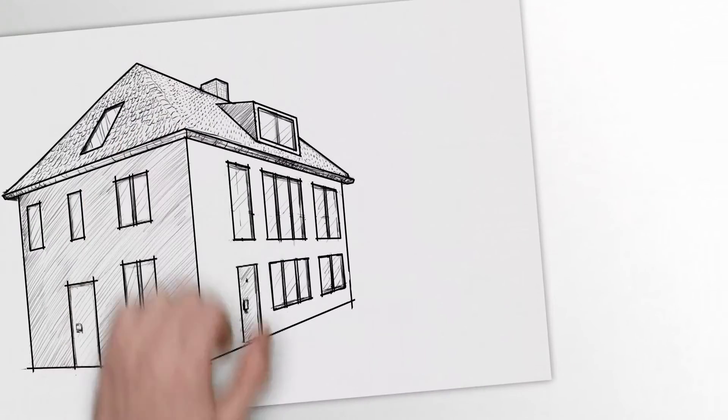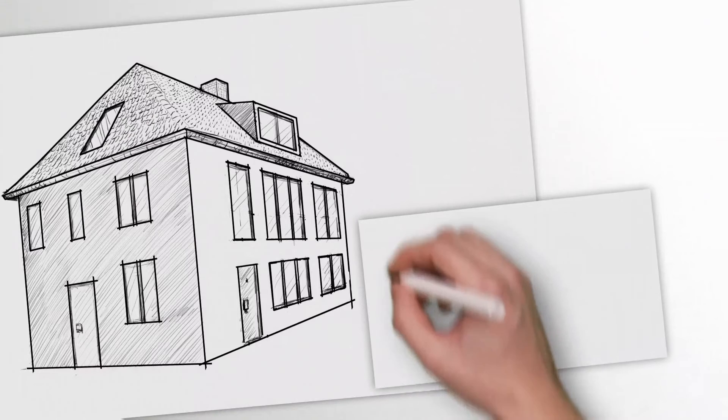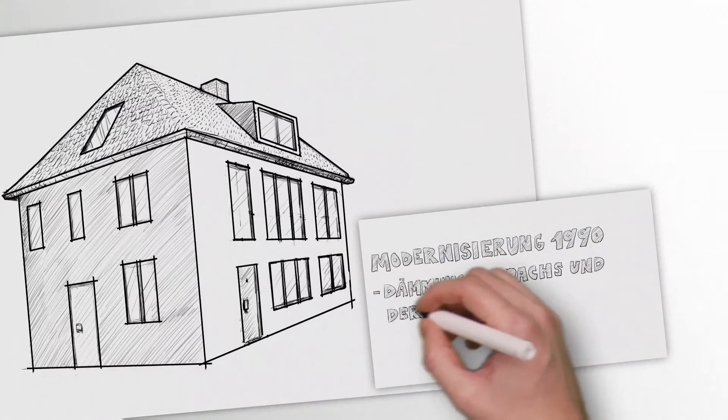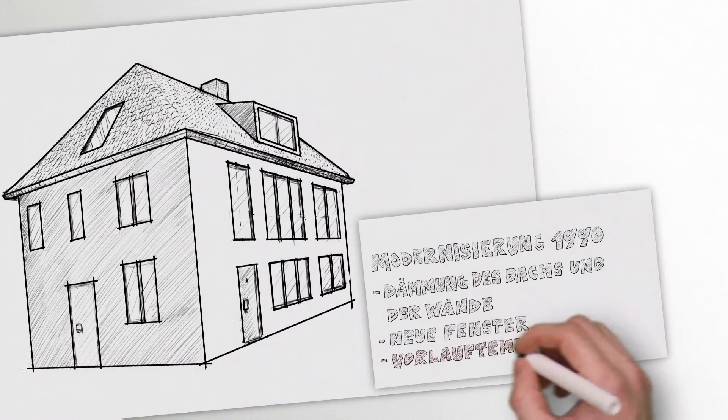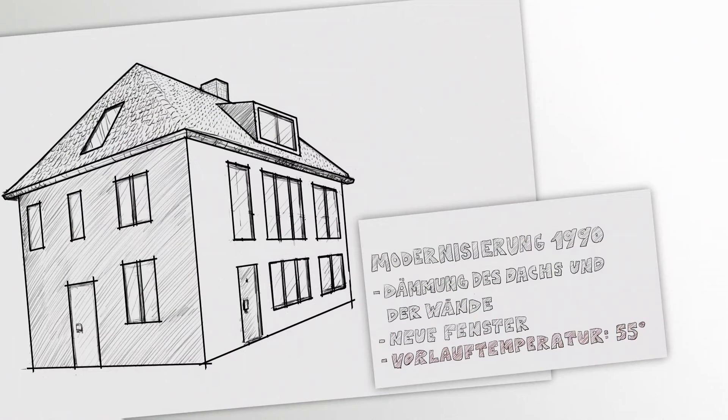The modernization of the property in 1990 has already improved things. The required flow temperature is now 55 degrees. At this temperature a modern heat pump can work very efficiently even with the existing heating distribution system.